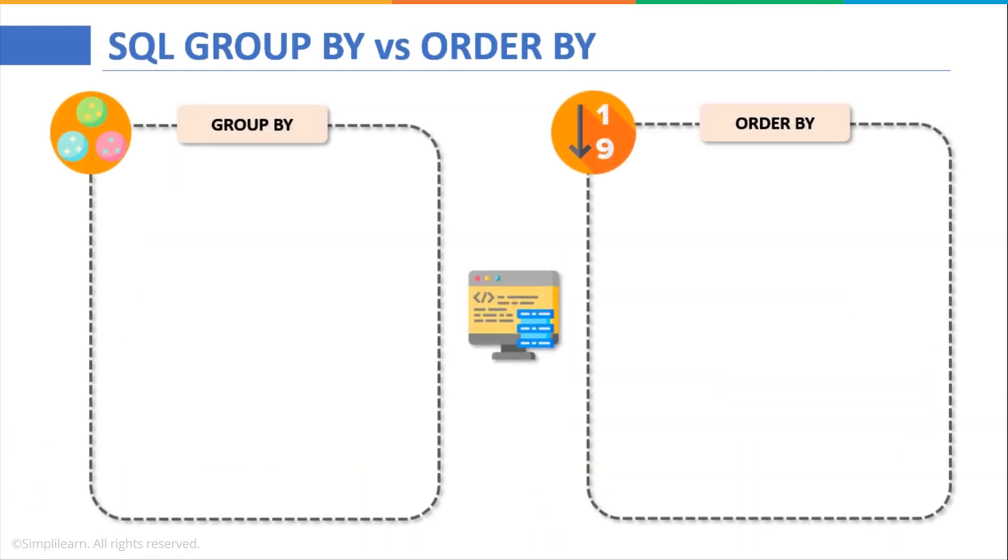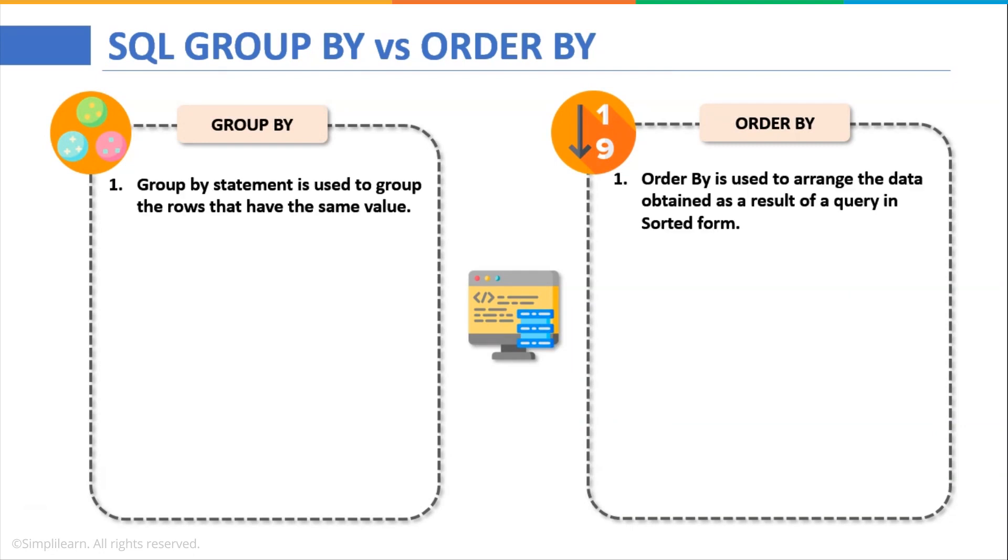Now that we have understood about both of these statements, let us now understand the differences between GROUP BY and ORDER BY. Now GROUP BY statement is used to group the rows that have the same value whereas the ORDER BY is used to arrange the data obtained in the resultant table of a query in sorted form.